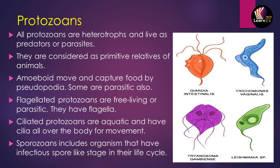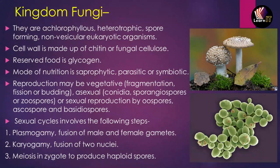Ciliated protozoans are aquatic and have cilia all over the body — these are finger-like projections for movement from one place to another. The last group is sporozoans, which includes organisms that have infectious spore-like stages in the life cycle. Now let us take the next kingdom, which is Kingdom Fungi.